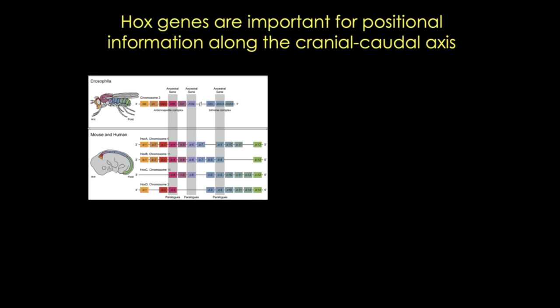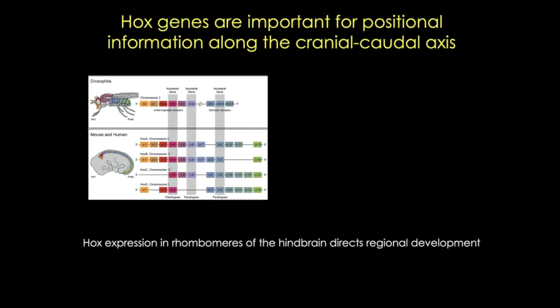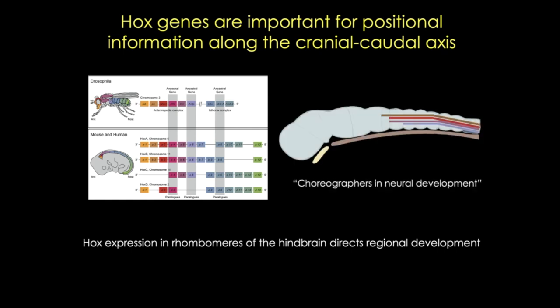In vertebrates, Hox genes, often in combination, help define somite identity, directing them to develop differently depending on where they are in the body. They also help specify the difference between an arm and a leg, between a humerus and an ulna, and between a pinky and a thumb. In the nervous system, their expression in segmented embryonic structures called rhombomeres directs the development of different brain regions. For example, expression of only the A2 Hox gene gives an identity for rhombomere 1, while expression of more of these genes is associated with the identity of rhombomere 8. Disruptions in Hox genes can alter the identity of a specific brain region.